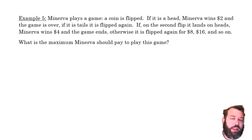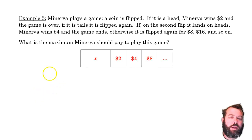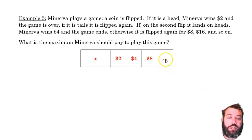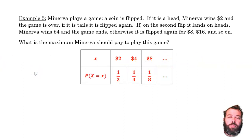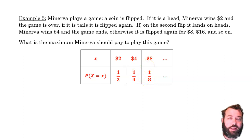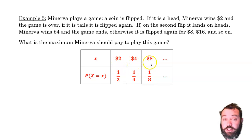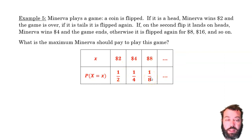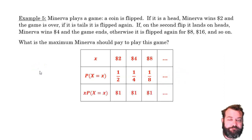Much like Maurice's game but more complicated. The possible values are $2, $4, $8, $16, $32, and so on — there will be an infinite number of discrete values. The probabilities are 1/2, 1/4, 1/8, and so on. The value times its probability gives: 2 times 1/2 is 1, 4 times 1/4 is 1, 8 times 1/8 is 1 — a fairly easy pattern to follow. We can see that the values are doubling every time, and the probabilities are halving every time.